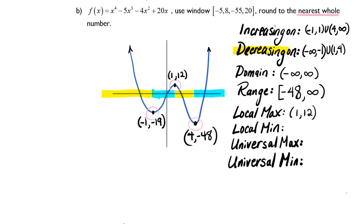The local minimum would be at negative 1, negative 19. But there is a lower point that is also on this function. The universal min is at 4, negative 48 because it is the lowest point overall, not just at this given interval over here on the left. And there is no universal max, so we would say does not exist, or DNE.